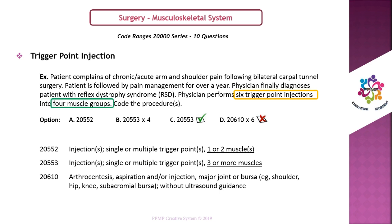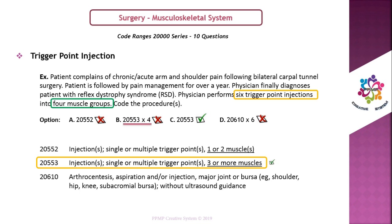The injection was given at four muscles, so we can eliminate options A and B. Note carefully — people often make mistakes here because options B and C look similar. If you see the code description of 20553, it says 'three or more muscles,' so only one code is enough. You should not multiply by four, because that applies only if the code description uses the term 'each'; otherwise, one code is sufficient.